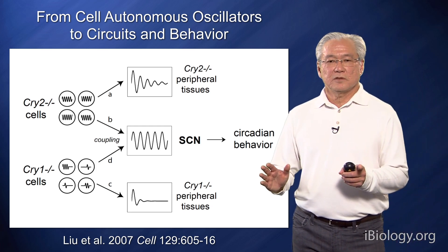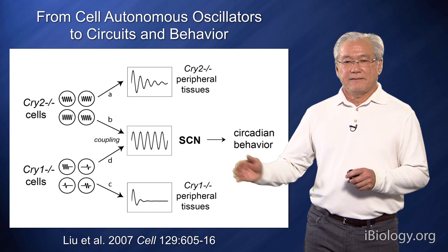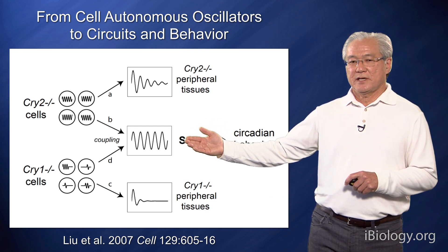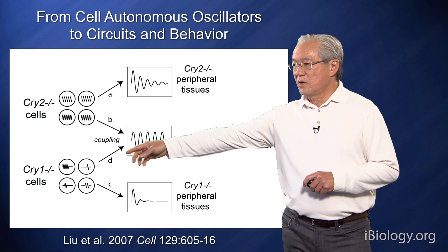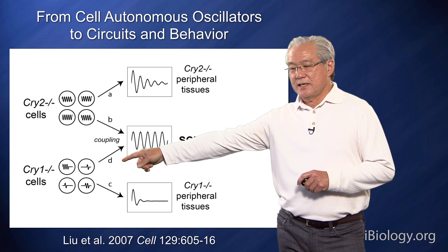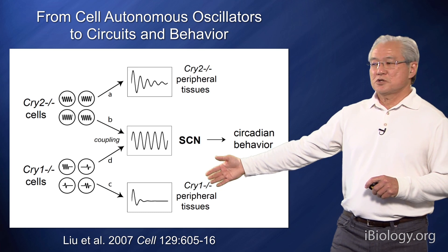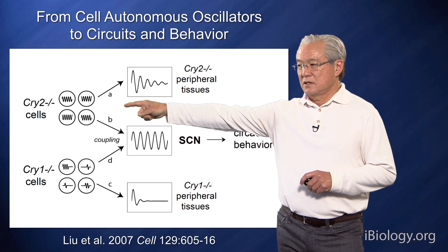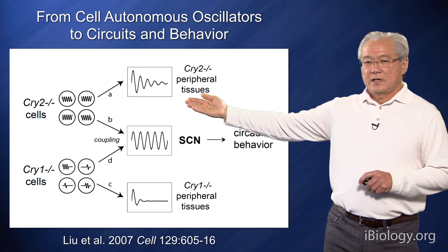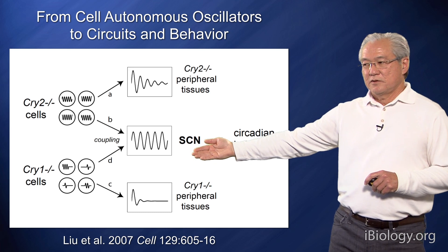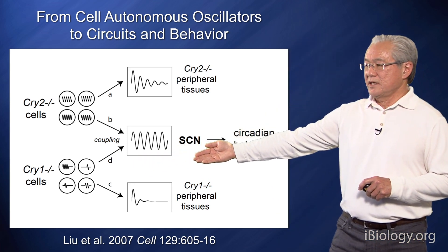These genetic experiments have really uncovered a new role for the suprachiasmatic nucleus — that is, to be able to integrate the information from many cells. What we saw is that the cry1 mutation could actually lead to a loss of rhythm at the cell-autonomous level, which was then reflected in peripheral tissues. But in contrast, the cry2 neurons, which have intact rhythms, did not have any effect on peripheral tissues. In the suprachiasmatic nucleus, we found a very interesting result where the cell-autonomous defect can actually be rescued by the SCN network.